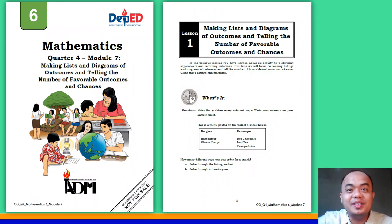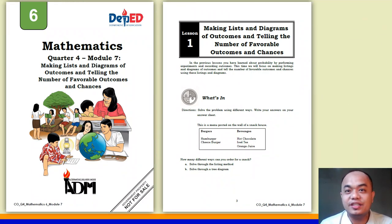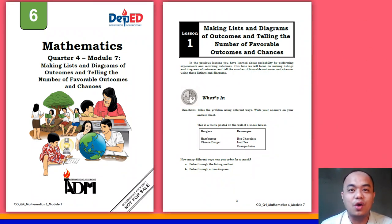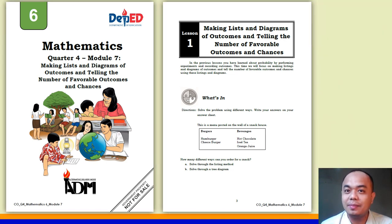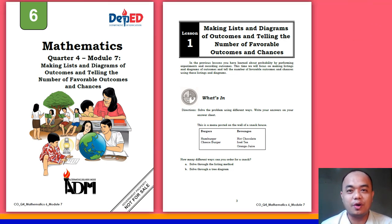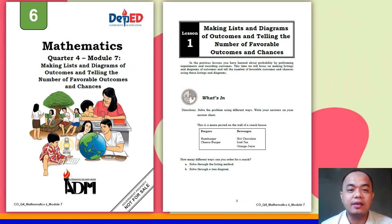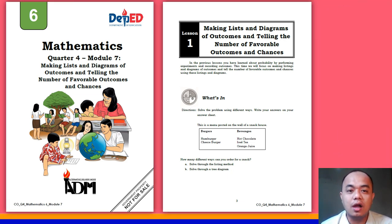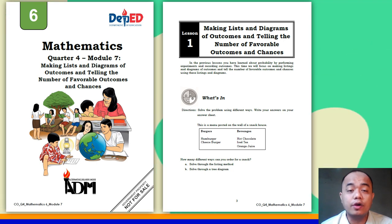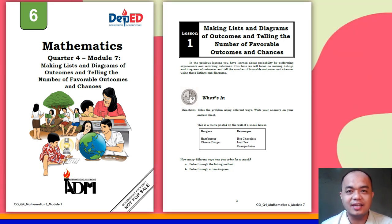Hello, everyone! How are you today? I am your teacher, Jem Raimon, and today we are going to discuss your Module 7 in your Mathematics 6, Quarter 4. And this module is entitled, Making Lists and Diagrams of Outcomes and Telling the Number of Favorable Outcomes and Chances.